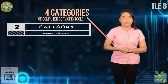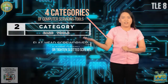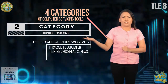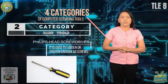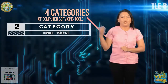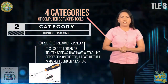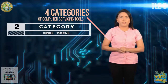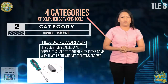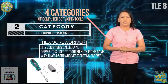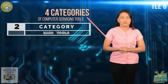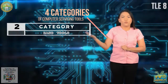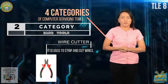The second category is hand tools. Examples are: Flathead screwdriver — used to loosen or tighten slotted screws. Phillips head screwdriver — used to loosen or tighten crosshead screws. Torque screwdriver — used to loosen or tighten screws that have a star-like depression on the top, a feature mainly found on laptops. Hex screwdriver — used to tighten knots in the same way that a screwdriver tightens screws. Needle nose plier — used to hold small parts. Wire cutter — used to strip and cut wires.